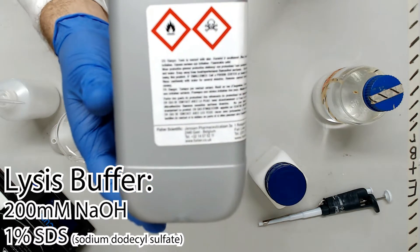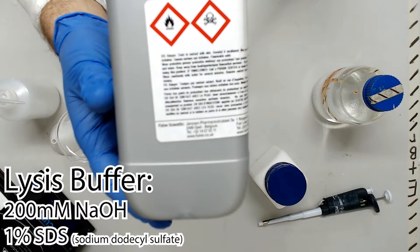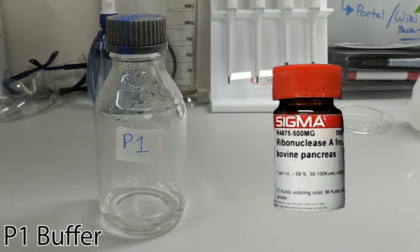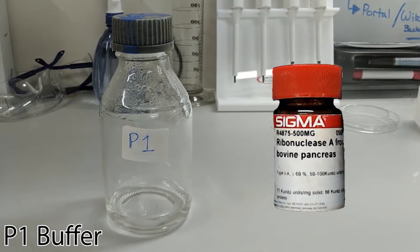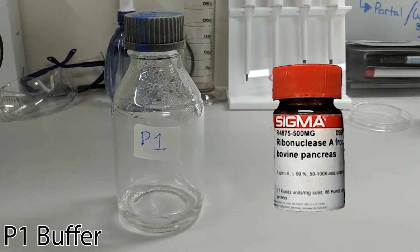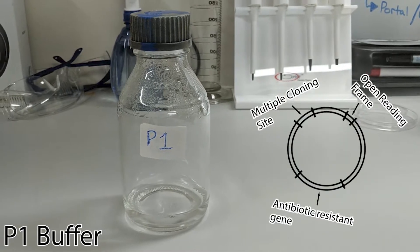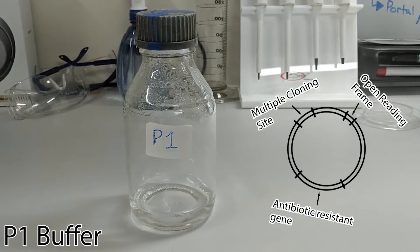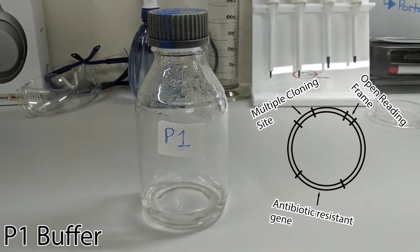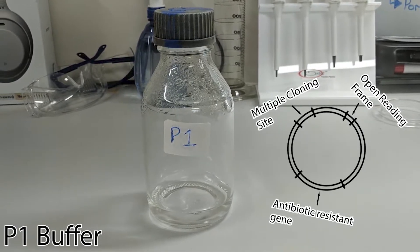When we use this buffer to lyse ourselves we are going to walk a delicate line. We must give sufficient time for the RNases in buffer P1 to do its dirty work cutting up all the RNA released by ourselves. However, leave the reaction too long and the mixture of intact proteases, detergent and sodium hydroxide will start to damage our plasmid DNA. Even shaking too vigorously while using this buffer can result in the shearing of plasmid DNA.